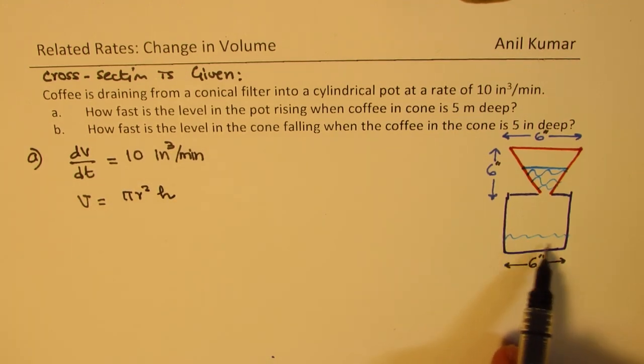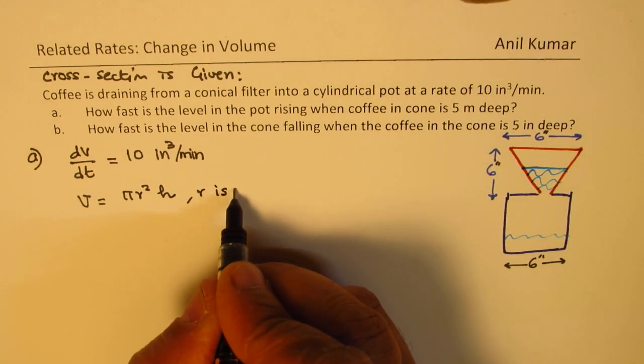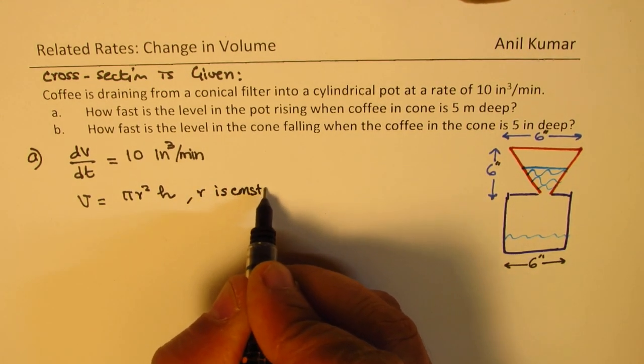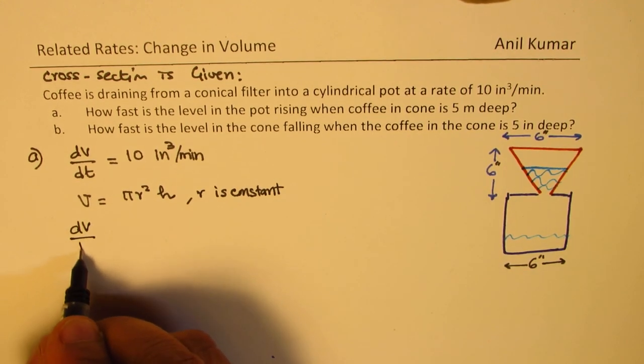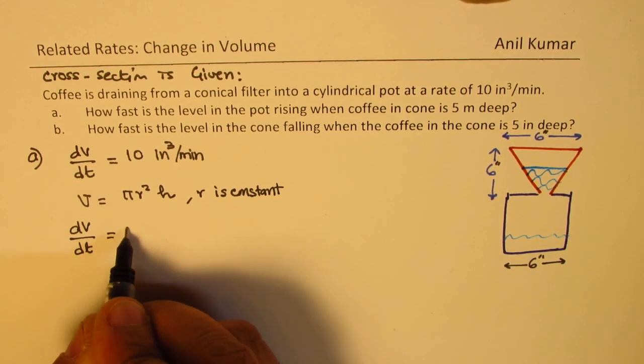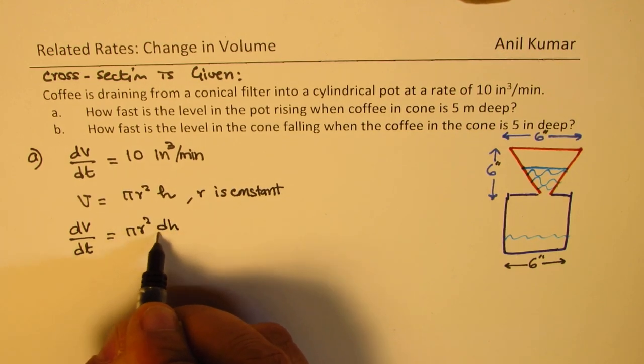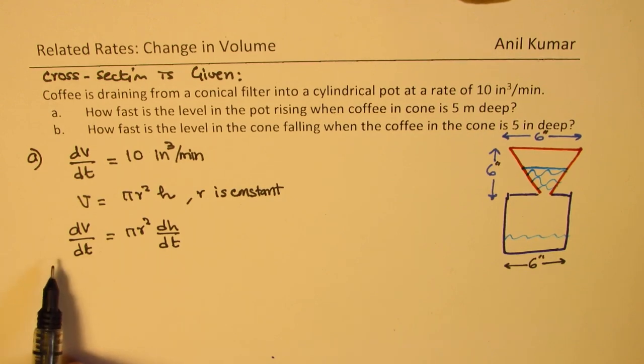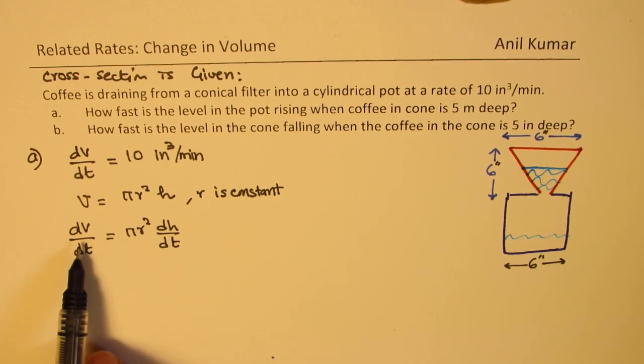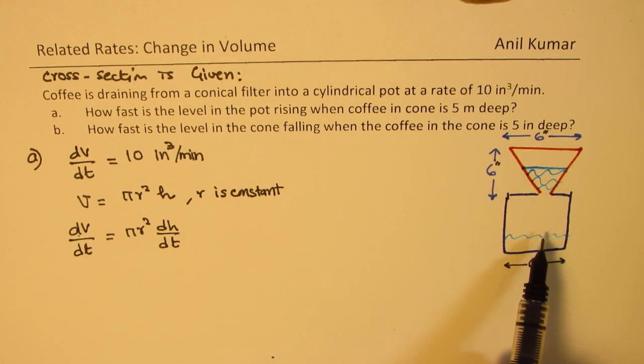Now the idea here is that the volume of a cylinder is πr²h. So that is the volume in this case. Now in this case, r is always constant. So for a cylinder, r is constant. So rate of change of volume with respect to time will be πr² dh/dt. Therefore it is directly proportional to the rate at which the coffee is dripping.